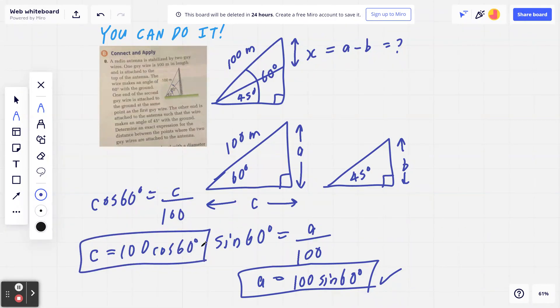Now if I go back and I think about this second triangle, isn't it true that they're both the same? Meaning, if c is 100 cosine 60 in the first triangle, then this is also 100 cosine 60 in the second triangle.